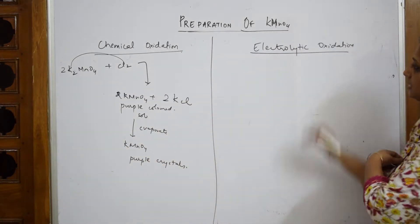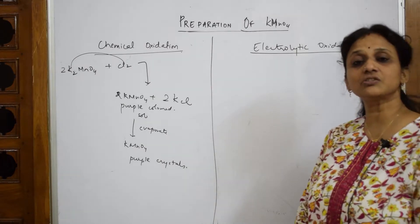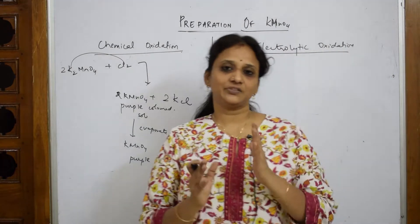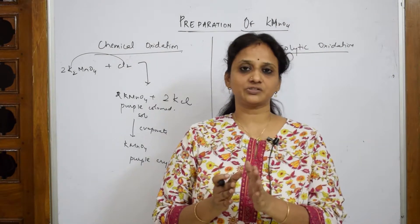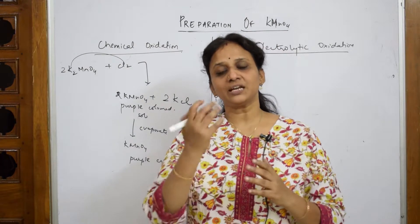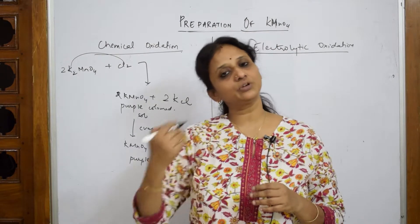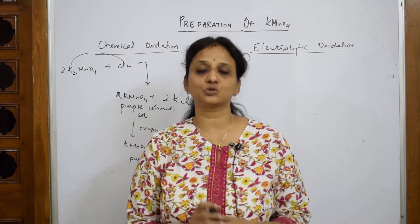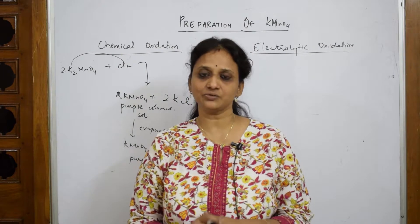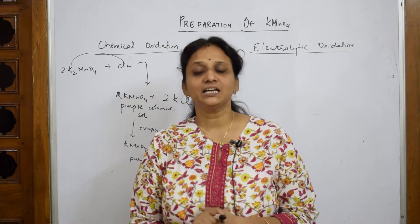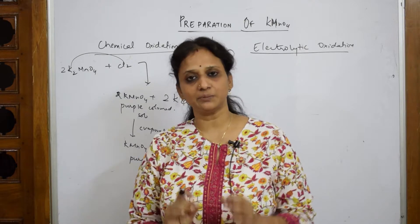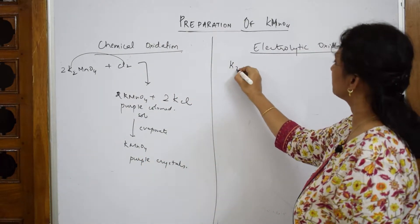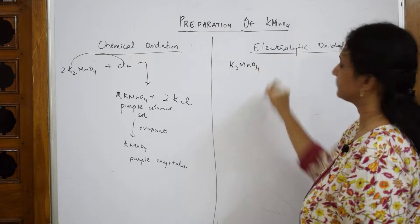The next important method is electrolytic oxidation. Whenever we speak about electrolysis, we speak about dissociation into anions and cations — cations going to the cathode and anions going to the anode — and finally writing the total reaction. In the electrolytic oxidation method, you take potassium manganate (K2MnO4).